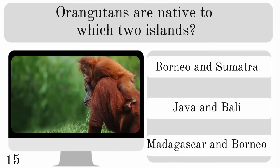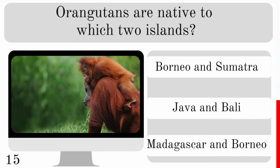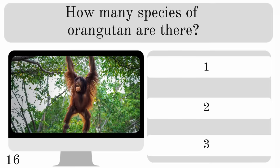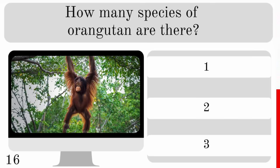Orangutans are native to which two islands — Borneo and Sumatra, Java and Bali, or Madagascar and Borneo? They are native to Borneo and Sumatra. How many species of orangutan are there — 1, 2 or 3? This will catch most of you out: the correct answer is 3.